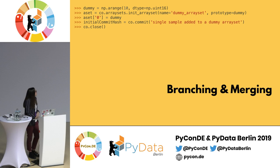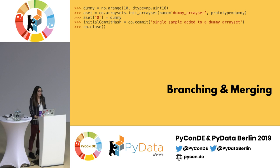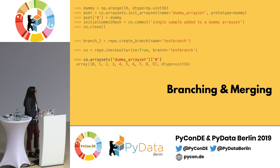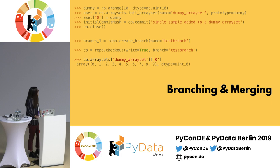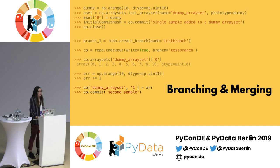Now let's look at branching and merging features. You create a new dummy array with range from 0 to 9, create a new array set, commit, and close. You create a new branch called TestBranch and check out into it. You verify that the array set created before contains what you expect, create a new array with numbers ranging from 1 to 10, and assign it as the second element of the array set. Commit, go back to master, and merge. That's it.